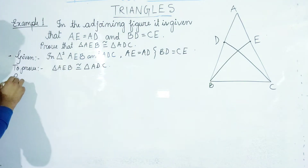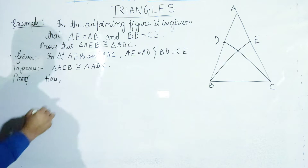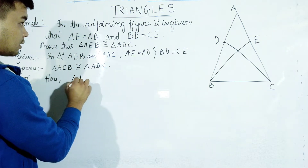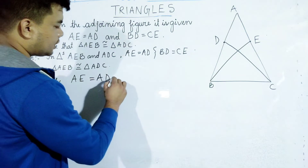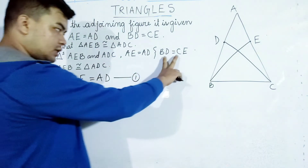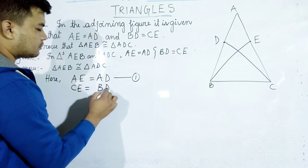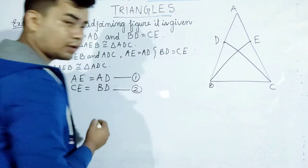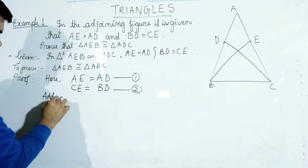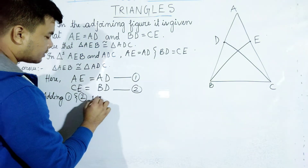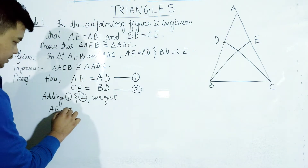Proof. Here we have a triangle. AE is equal to AD — this is equation number 1. This is equation number 2. What we have to do is add 1 and 2. We get — it's the same.